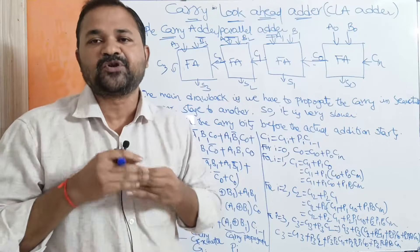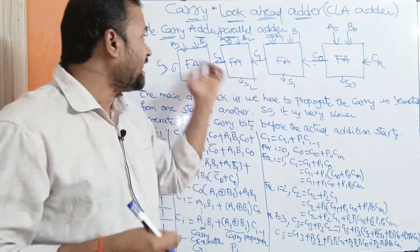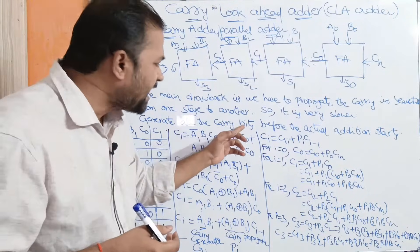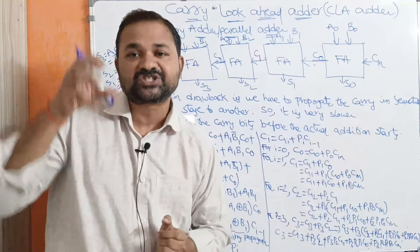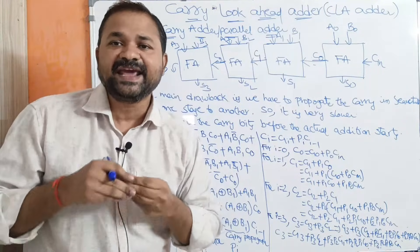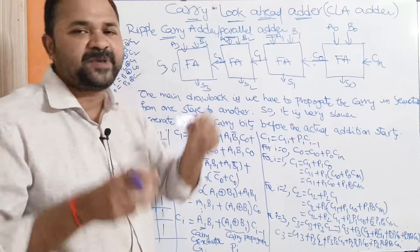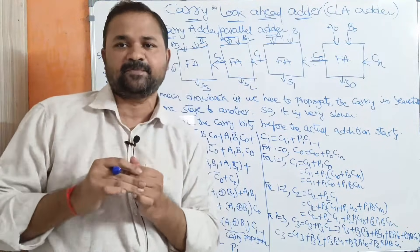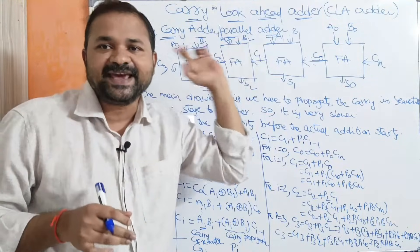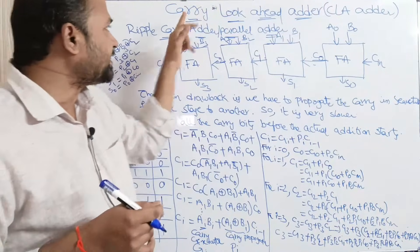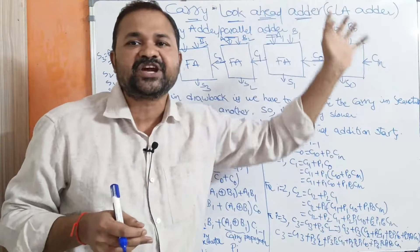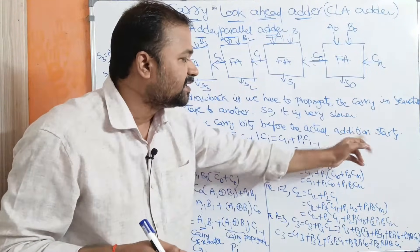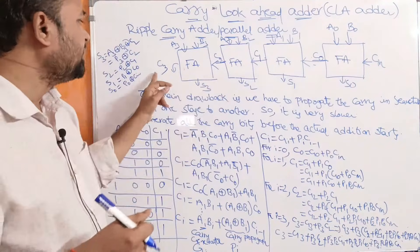To overcome this problem we use the carry look ahead adder, which is very much faster and produces outputs at a much greater speed than the ripple carry adder. The name itself specifies the meaning: 'look ahead' means we calculate carry bits ahead of time, that is, before the actual addition starts. So before producing the sum we need to generate all the carry bits.